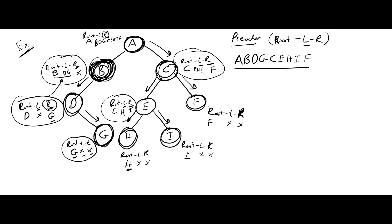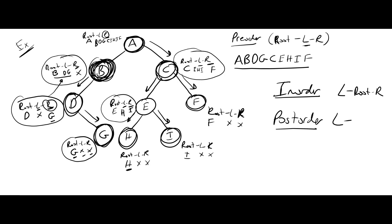The pre-order traversal of this binary tree is A, B, D, G, C, E, H, I, and F. You can apply the same policy for in-order using left, root, right steps, and for post-order using left, right, root steps. You can try in-order and post-order traversals by yourself to practice. That's all for today — have a nice day!